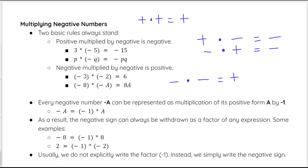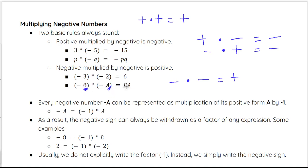For example, 3 times negative 5 is negative 15. P times negative Q is negative PQ. Negative 3 times negative 2 — because they're both negative, the negatives cancel and it turns into a positive 6; you're really just doing 3 times 2 which gives you 6. Negative 8 times negative A — negative times negative turns into a positive, so you're really just doing 8 times A, which is 8A.